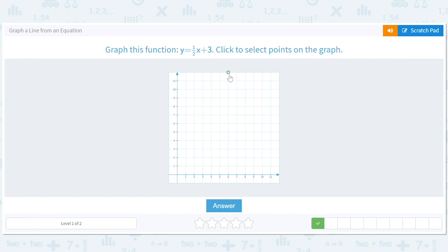So our y intercept is three. So we're going to put a point at zero comma three. And then our slope is one half. So what does that mean? Well, one way of thinking about that is every time we move one to the right, we move one half down.